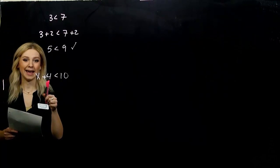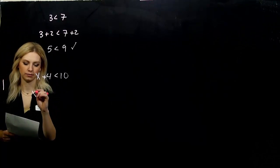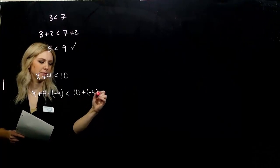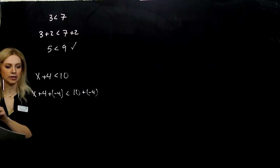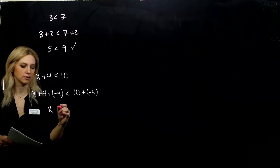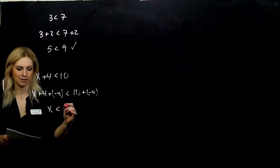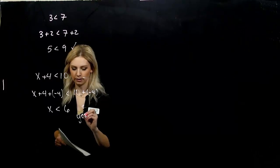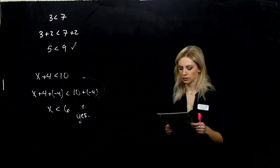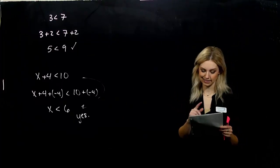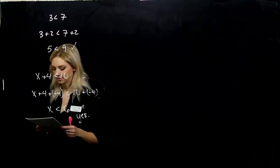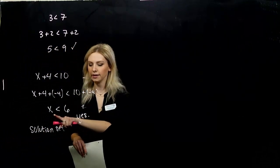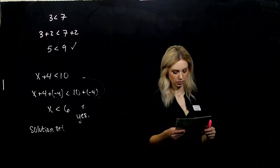So I need to add what to this side to get rid of 4. We usually just say subtraction, but I could add a negative to both sides of the same exact value. And what are we going to be left with? So on the left, positive 4 and minus 4, those are going to cancel. We'll be left with x less than 10 minus 4 gives me 6. So are those two equivalent? What we started with and what we ended with. Yeah, they still are. Those are equivalent.